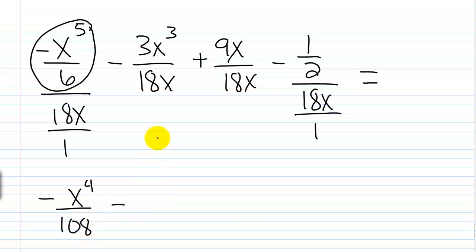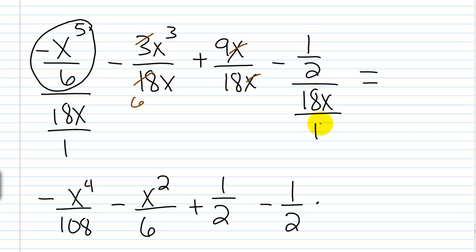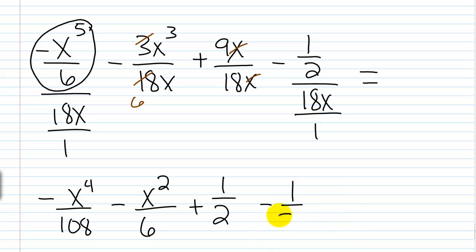Continuing: for -3x³ ÷ 18x, the 3 and 18 cancel to leave 6 in the denominator, and x³/x = x², giving -x²/6. For 9x ÷ 18x, the x's cancel and 9/18 = 1/2, giving +1/2. For (-1/2) ÷ 18x, multiply by reciprocal 1/(18x): (-1/2)·(1/(18x)) = -1/(36x). So the full answer is -x⁴/108 - x²/6 + 1/2 - 1/(36x).